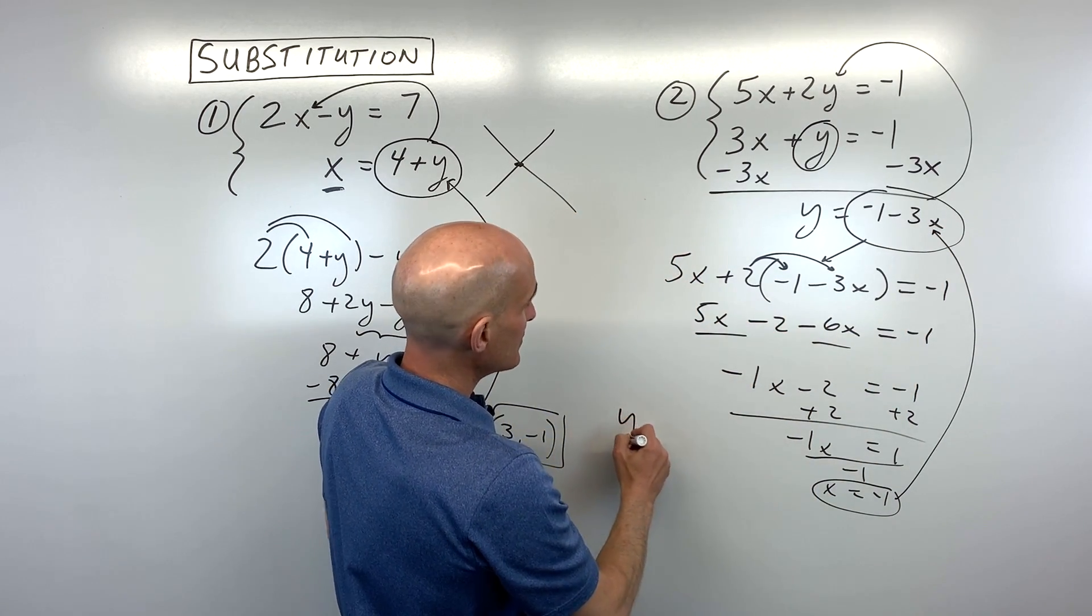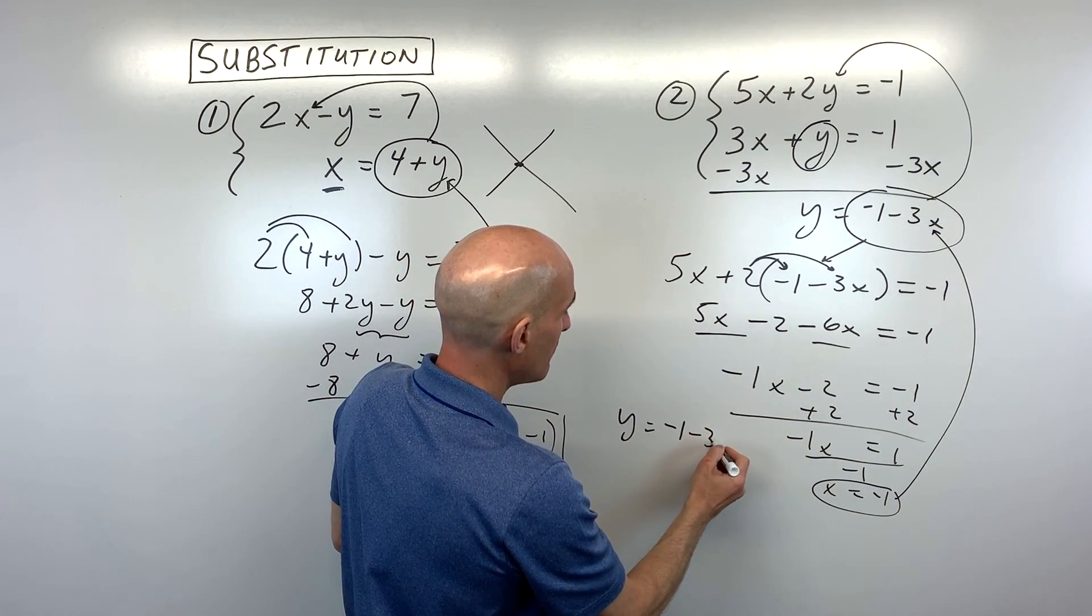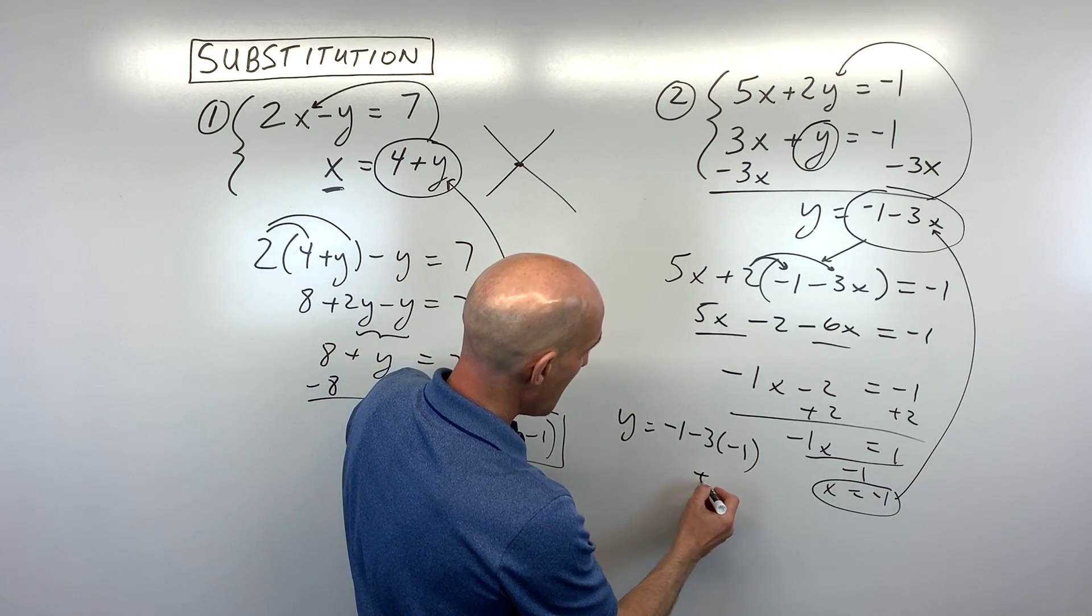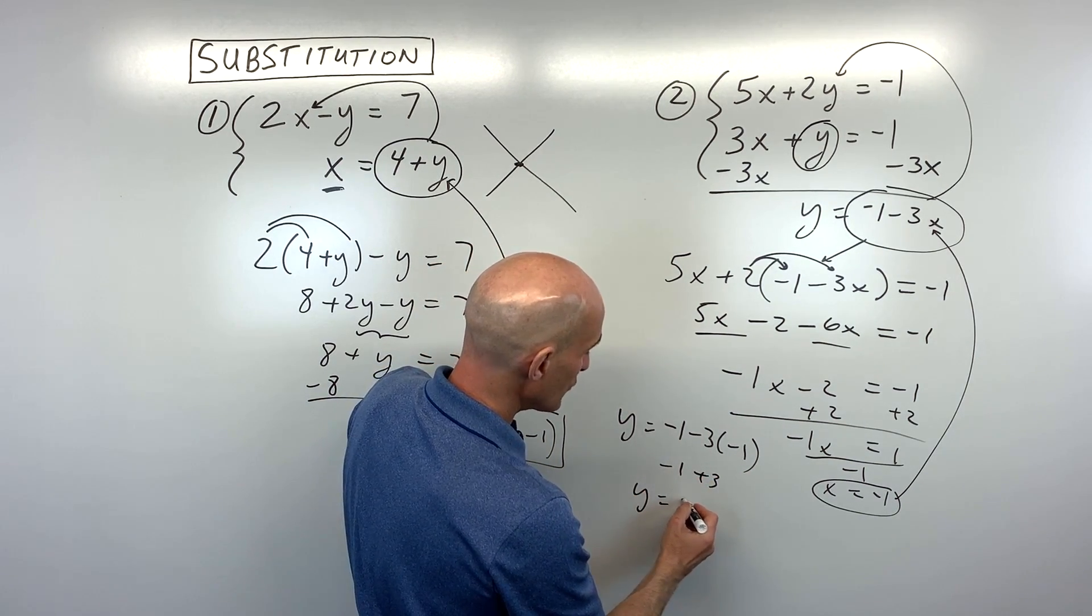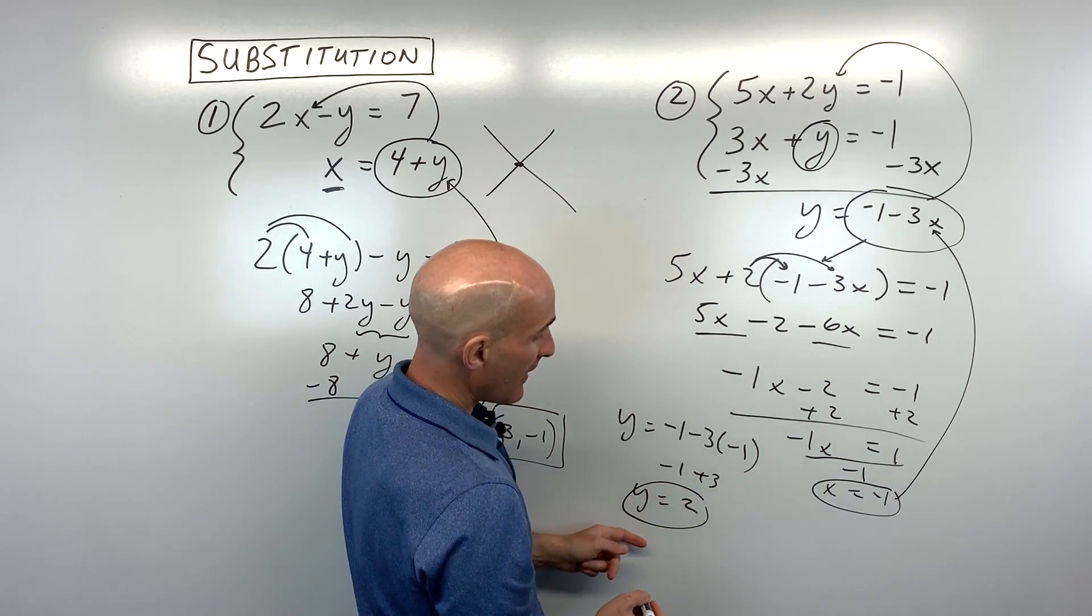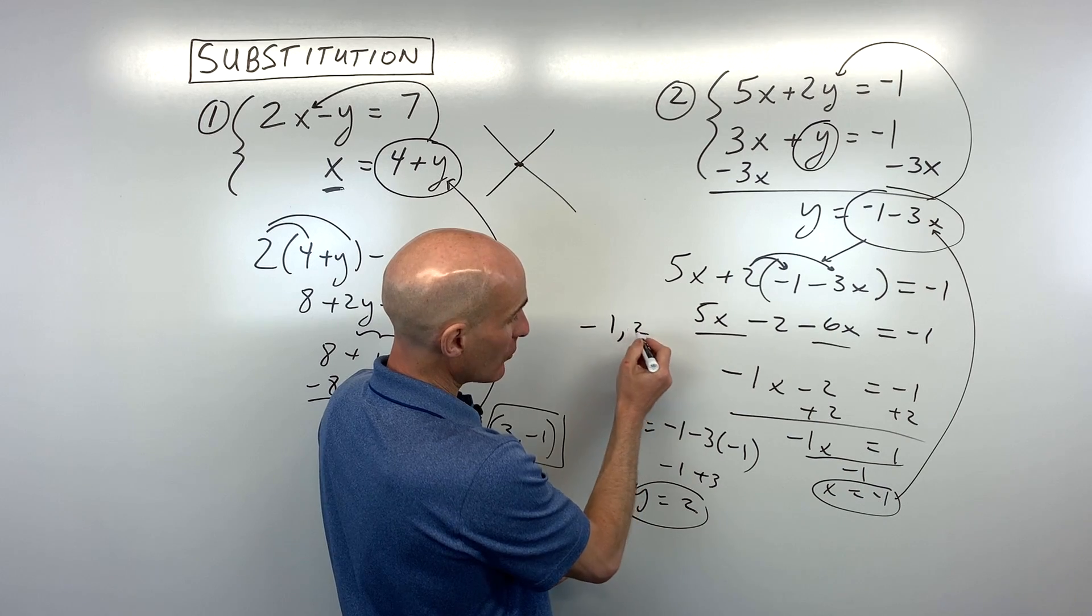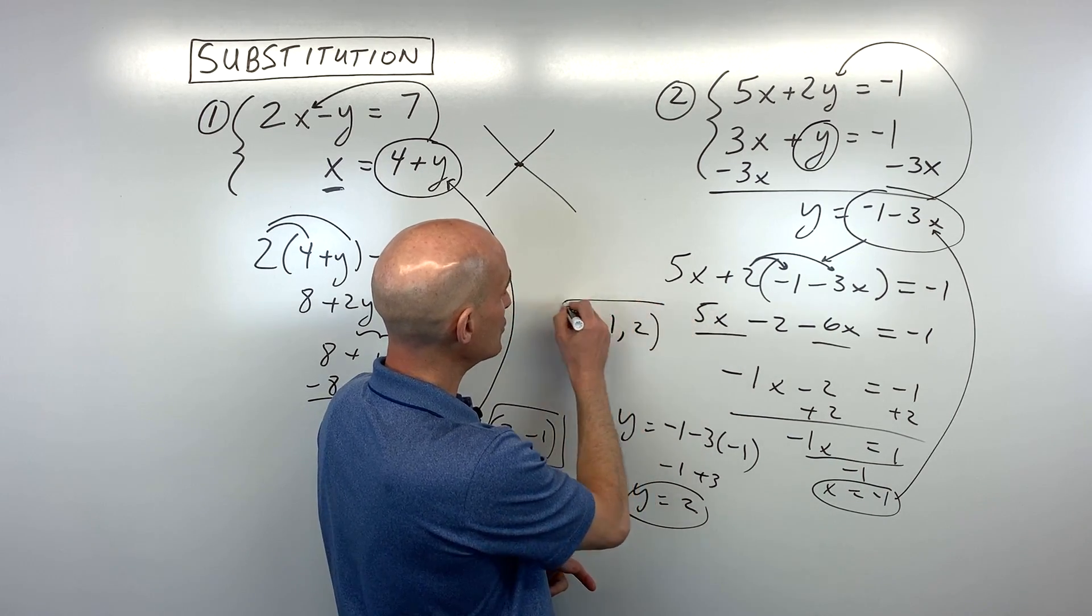That gives us y equals negative 1 minus 3 times negative 1. Negative 3 times negative 1 is positive 3, so y equals 2. When we write our final answer, we write it as a coordinate pair: x comma y, or in this case, negative 1 comma 2.